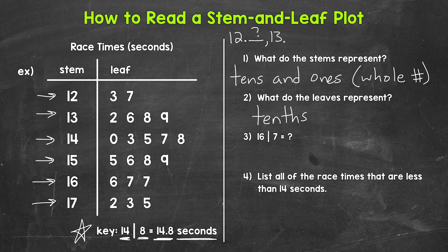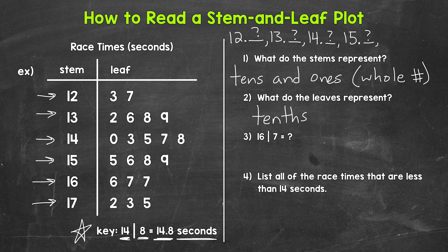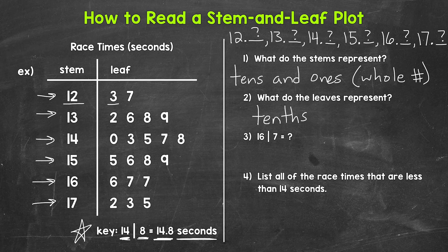Stem of 15, decimal, leaves. Stem of 16, decimal, leaves. And stem of 17, decimal, leaves. Let's put this all together. Looking at the stem of 12 with a leaf of 3 and a leaf of 7, that gives us 12 and 3 tenths and 12 and 7 tenths — those are the 12-second race times. So 12.3 seconds and 12.7 seconds.